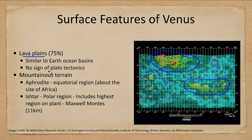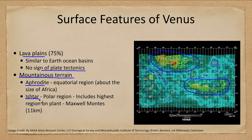Lava plains make up a vast majority of the surface, and we see no sign of active plate tectonics on the surface of Venus — though that doesn't mean there weren't any in the past. We also see mountainous terrain. Aphrodite is the equatorial region, about the size of Africa, and Ishtar is the polar region, which includes the highest region on the planet. The Maxwell Montes are the highest mountains at 11 kilometers — higher than any mountains on Earth.